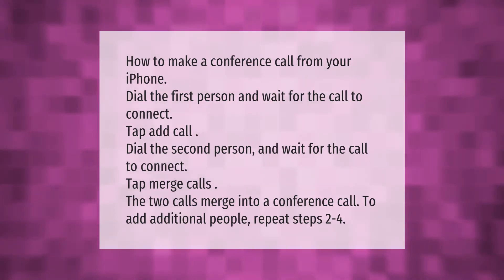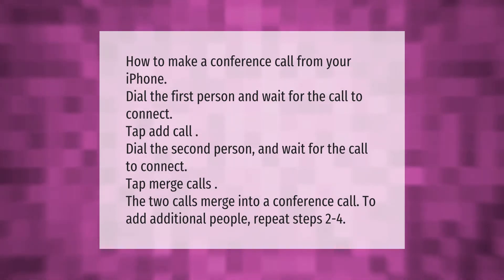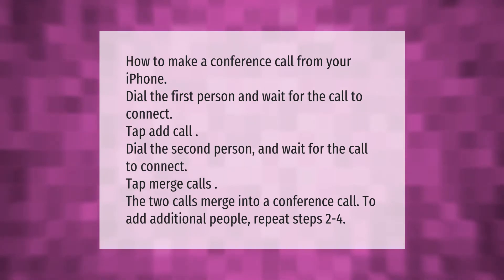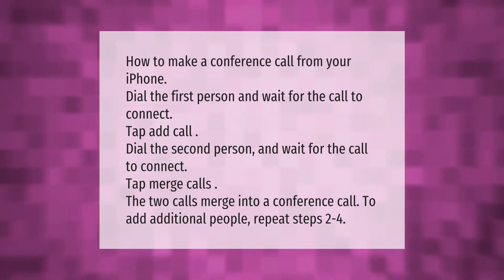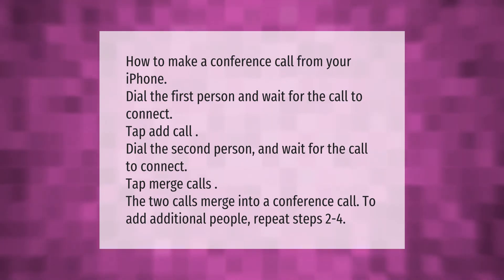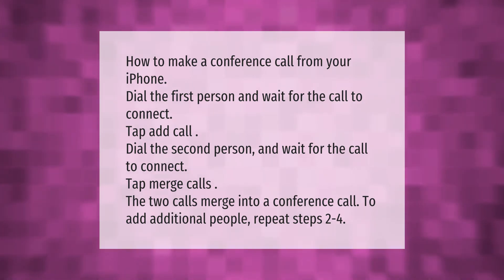How to make a conference call from your iPhone: dial the first person and wait for the call to connect, then tap Add Call. Dial the second person and wait for the call to connect, then tap Merge Calls. The two calls merge into a conference call. To add additional people, repeat steps two to four.